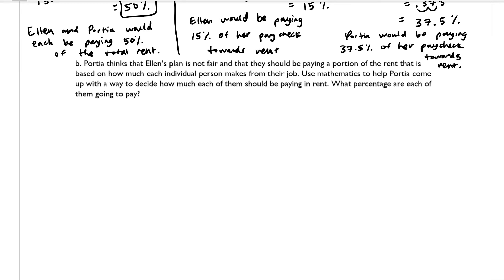So one way that we could think about this is we can think about how much Ellen makes and how much Portia makes and add them together and think of it as like one big pot. And so if we were to add that together, we would add $5,000 plus $2,000 and that equals $7,000. So that's how much they make combined.